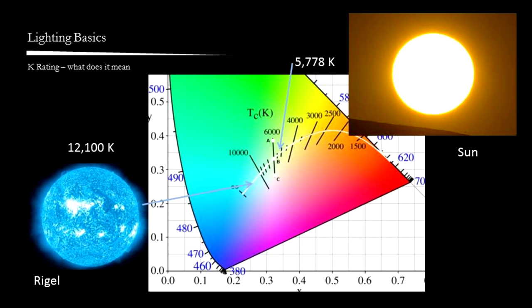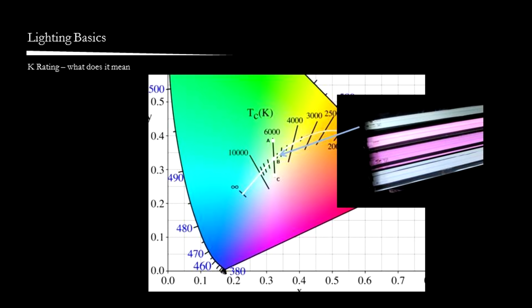The Planckian locus is only for black body radiators. Obviously, when your fluorescent lamp has a 6,500K rating, it doesn't mean that the temperature of the light is 6,500K. What it does mean is that it has the same color hue as an actual black body radiator which is heated to 6,500K.